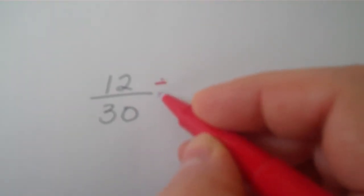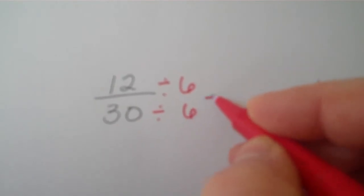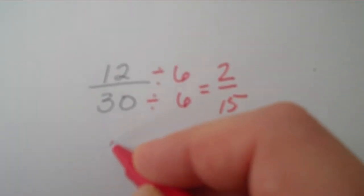That's right. You can divide 12 by 6, and you can divide 30 by 6, leaving you with 2 fifths. Or you might have done it this way.